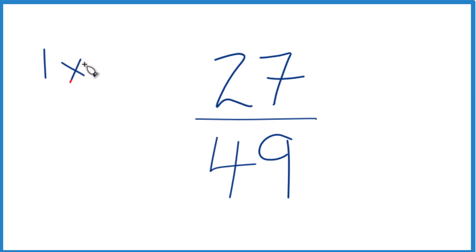27: 1 times 27, that equals 27, 3 times 9, that's 27. That's it.